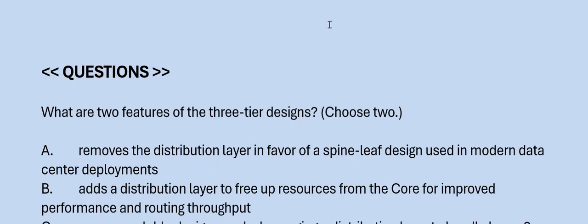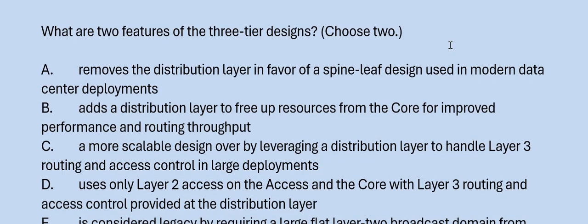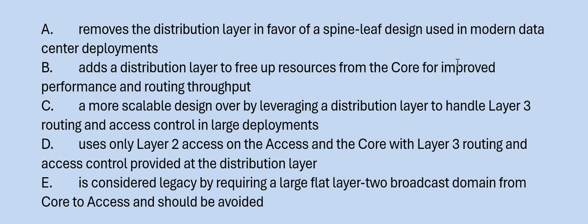Question: What are the two features of a three-tier design? Choose two. Option A: removes the distribution layer in favor of a spine-leaf design used in modern data center deployments. Option B: adds a distribution layer to free up resources from the core for improved performance and routing throughput. Option C: a more scalable design by leveraging a distribution layer to handle layer 3 routing and access control in large deployments. Option D: uses only layer 2 access on the access and core with layer 3 routing at the distribution layer. Option E: considered legacy by requiring a large flat layer 2 broadcast domain from core to access. The correct answers are Option B and C.